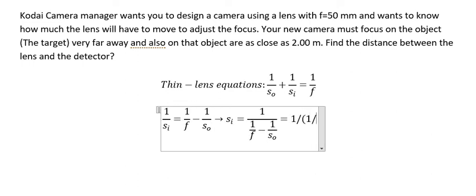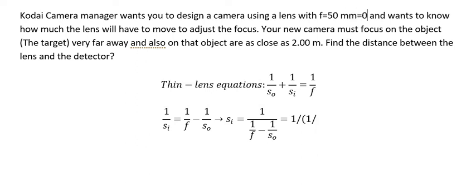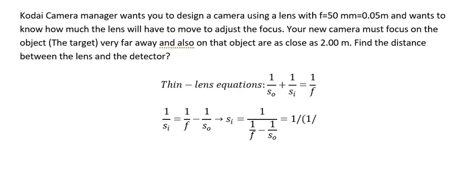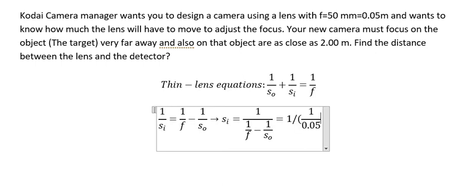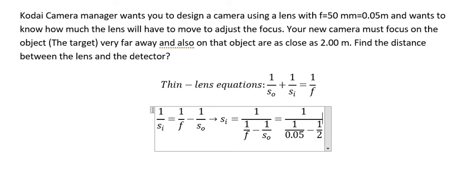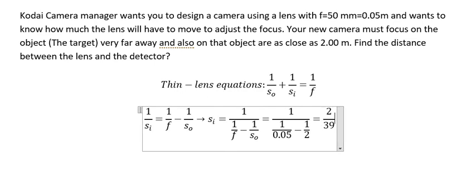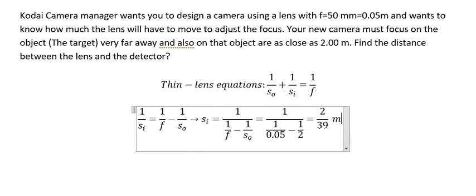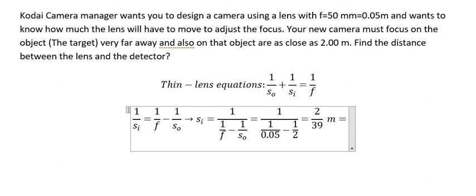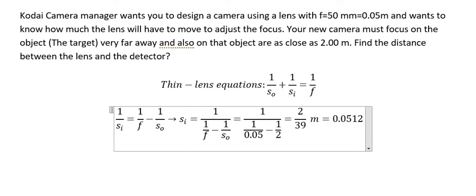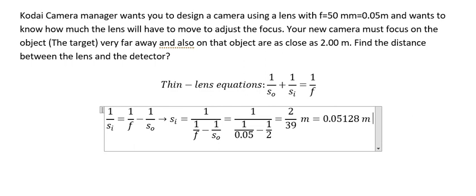Now we input the values. f is 50 millimeters, which we convert to 0.05 meters. For an object at 2 meters, we calculate 1 over 0.05 minus 1 over 2. This gives us 2 over 39... wait, we calculate 1 over Si, and we get approximately 2 over 0.05 minus 1 over 2, resulting in about 0.05128 meters.